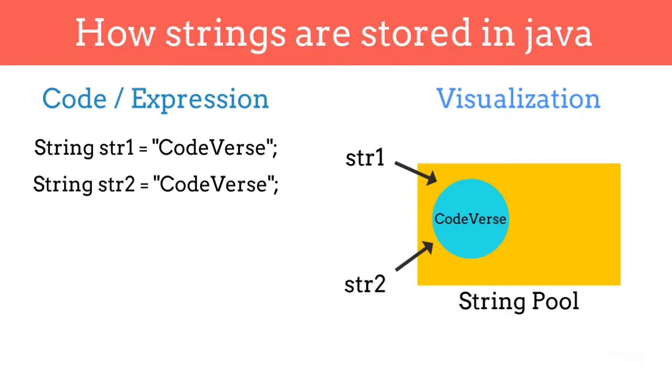So double equal to operator is used to check if these two variables are storing the reference to the same object in a string pool or not. This means if we write str1 double equal to str2, then it will return true.